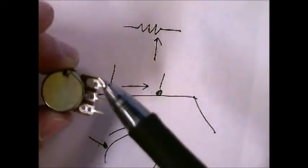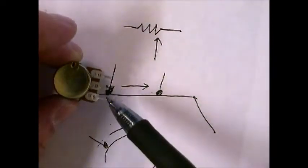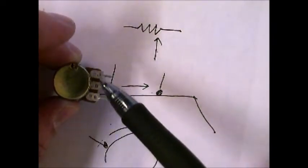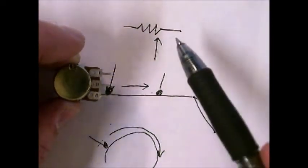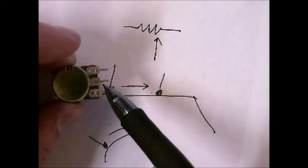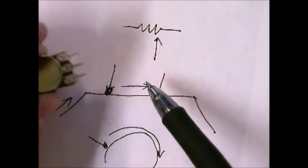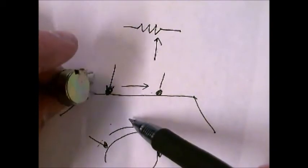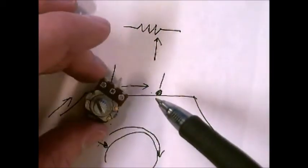That's total preference, maybe how you set it up or just how you feel that day. Which one you want to use for positive and which one you want to use for ground. But the center one is always the output signal, the resistance output signal. So that is how a potentiometer works.